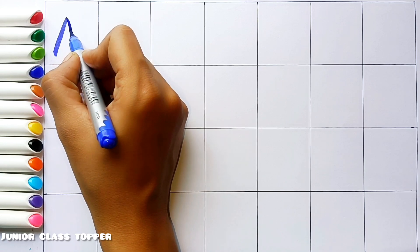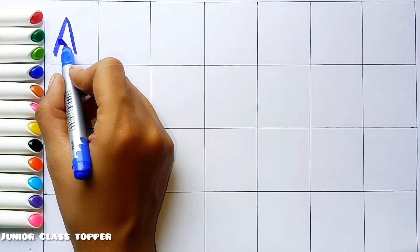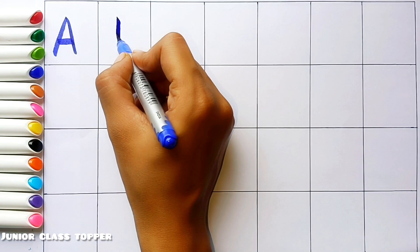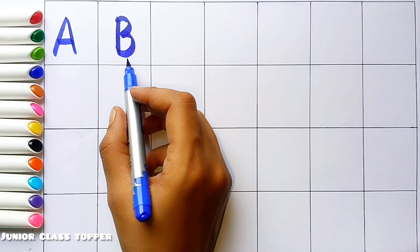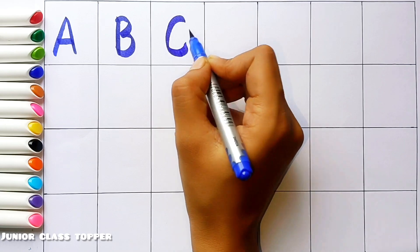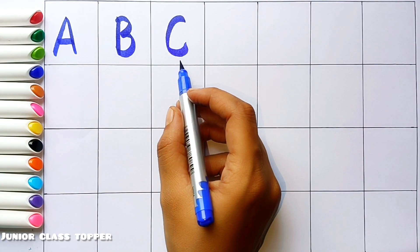A, A for apple. B, B for bun. C, C for car.